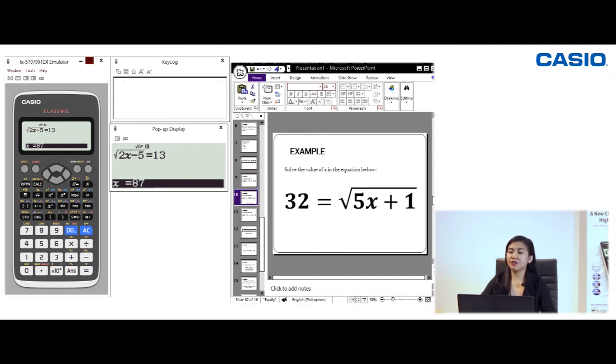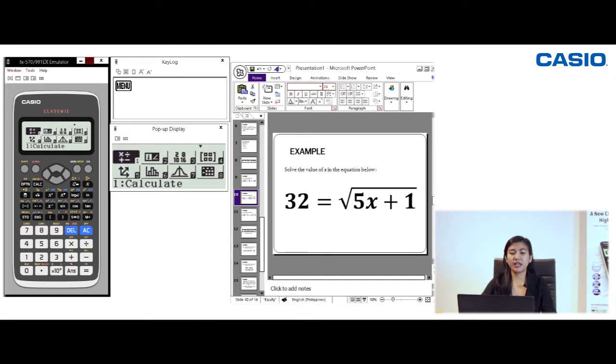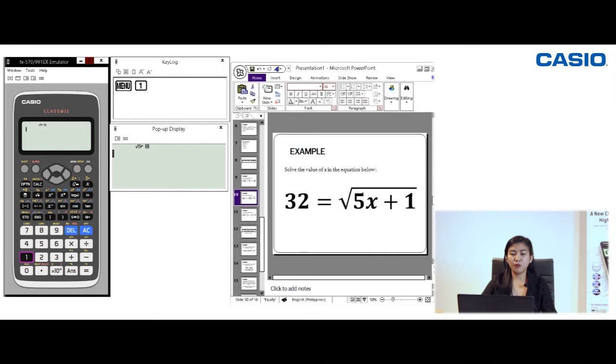Next example. Let's solve the value of x in the radical equation: 32 is equal to the square root of 5x plus 1. So once again, let's set the device in calculation mode. Let's press menu, 1, and let's enter the equation.